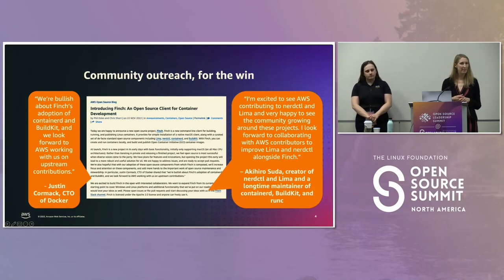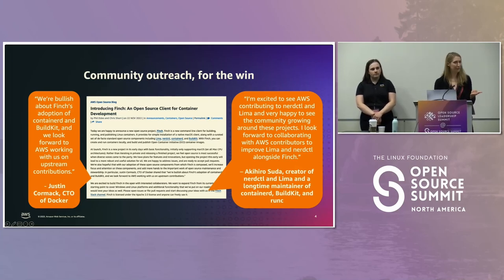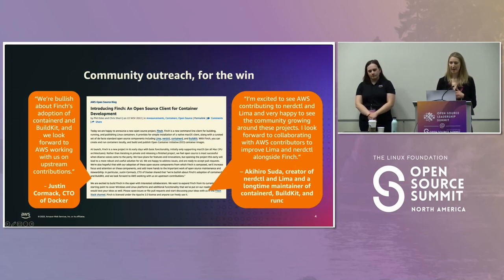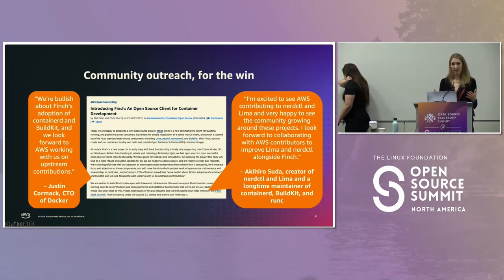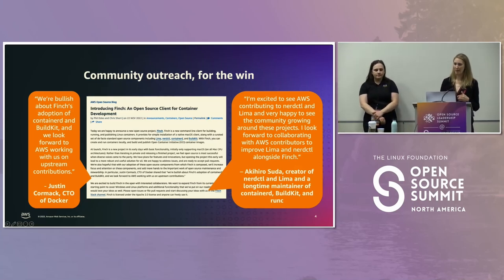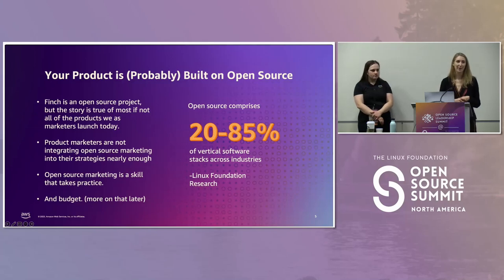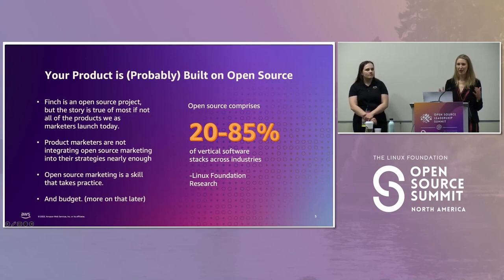The result was a product launch that launched with community support from the very beginning. Phil actually got approval from key community members — Akihiro Suda and Justin Cormack from Docker — to use quotes in our launch blog saying they were excited to work with AWS on these projects. That public support dramatically reduced risk to the product and brought the community along on the journey. Now Finch is an open source project itself, which is a bit of a unique case study and an edge case, since as a product marketer you're not always going to have an open source engineer like Phil Estes helping guide your product.